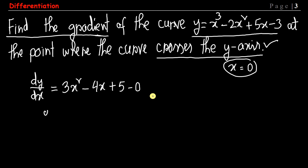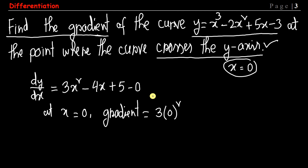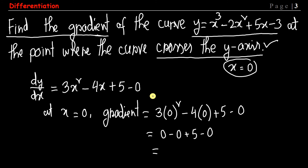At x equals 0, we substitute into the gradient expression: 3(0)² minus 4(0) plus 5. Each term with x gives 0, leaving just 5. So the gradient at the point where the curve crosses the y-axis is 5. This is our answer.